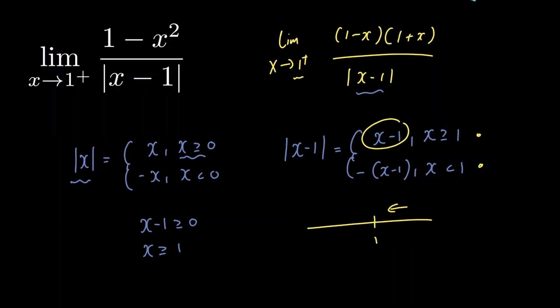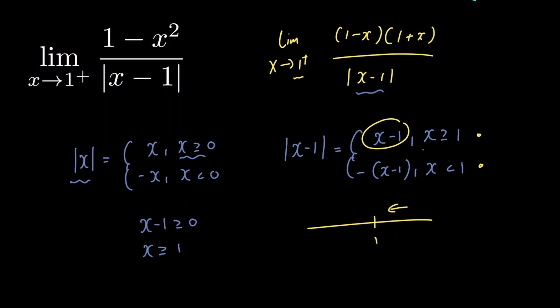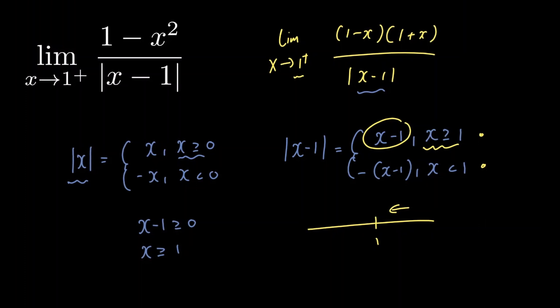Well it's x minus 1. And the reason is because as x approaches 1 from the right, x is always greater than or equal to 1. So let's rewrite our limit using the information that we have now.